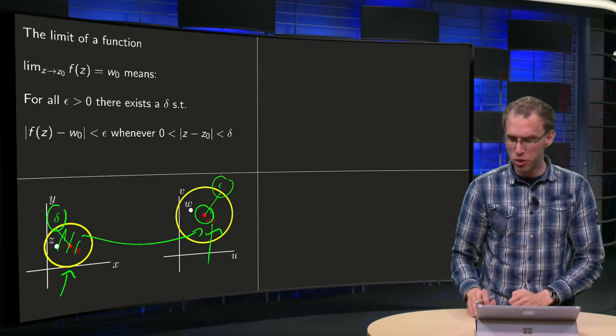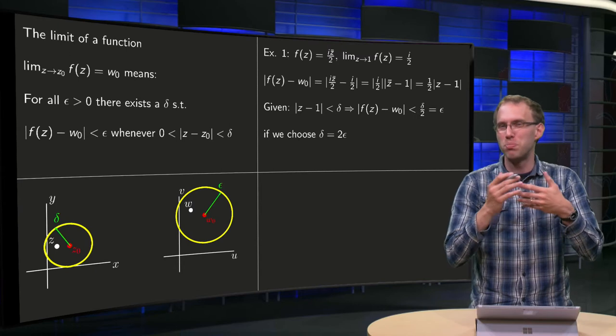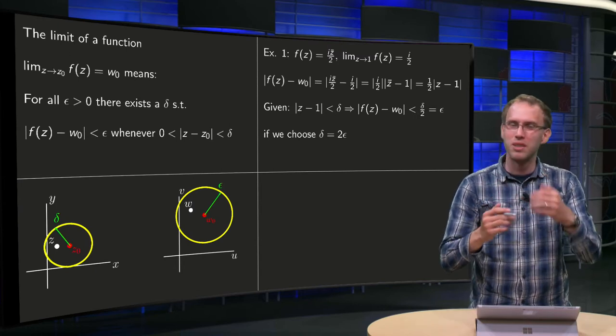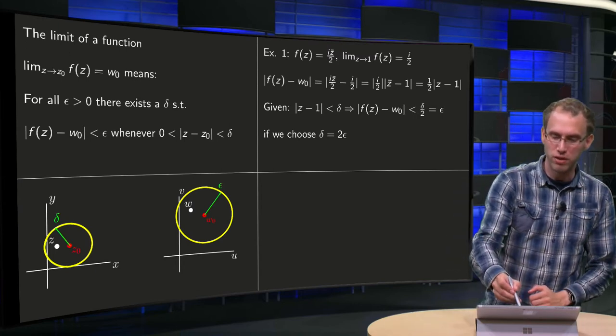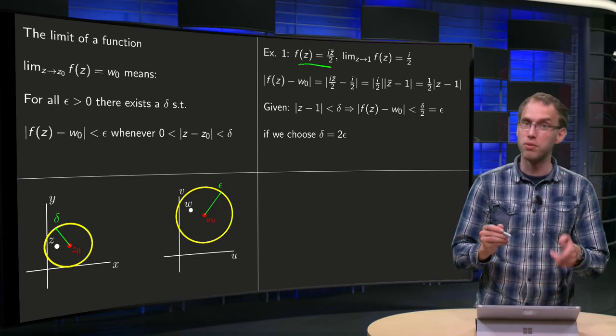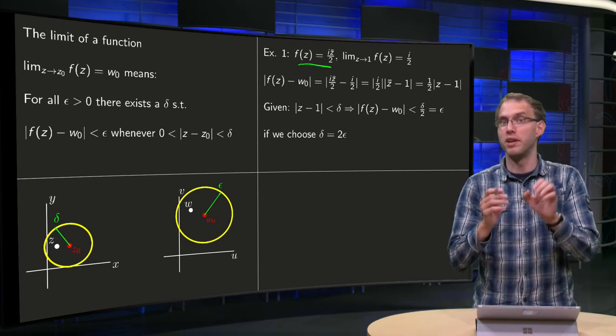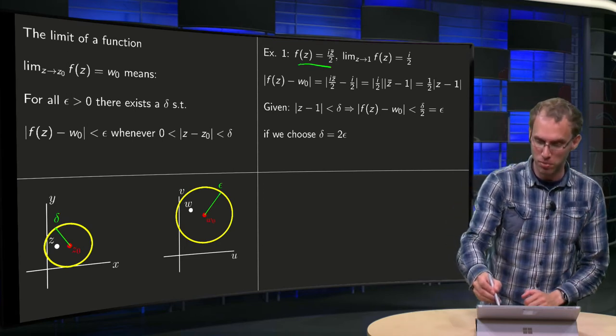Now let's try to use it. So let's use it in a limit which is pretty obvious, just to see how the definition works. We have f(z) equals iz̄/2, and if you take the limit for z to 1, nothing special really going on. You could just plug it in, and you see the limit would be i/2.